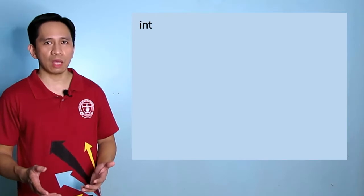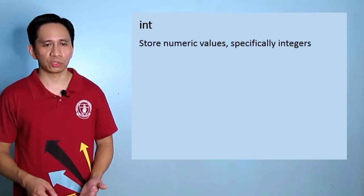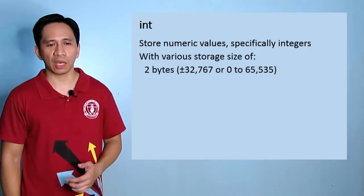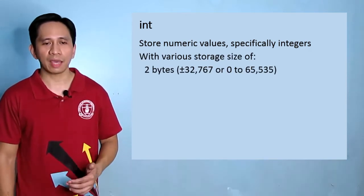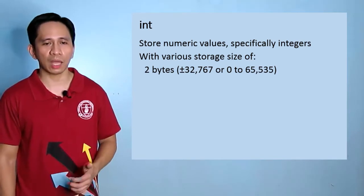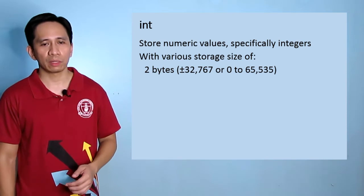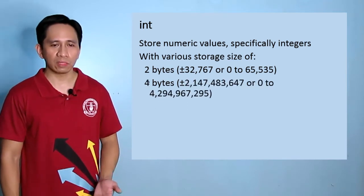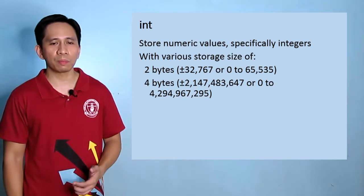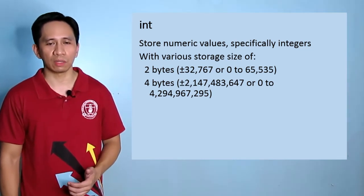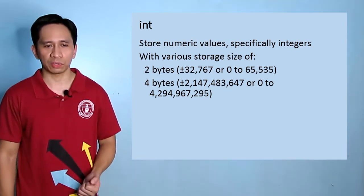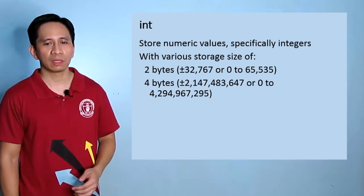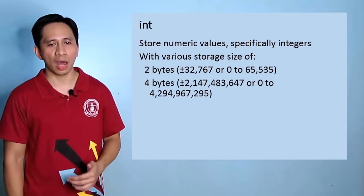The next data type is int. It stores numeric values, specifically integers, which means positive whole numbers, negative whole numbers, and zero, with various storage sizes. 2 bytes for the signed, ranging from -32,767 to 32,767, or for the unsigned, 0 to 65,535. 4 bytes for the signed, ranging from -2,147,483,647 to 2,147,483,647, or for the unsigned, 0 to 4,294,967,295.